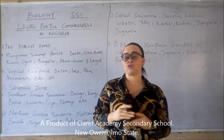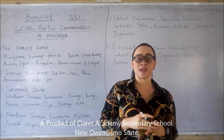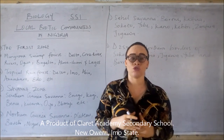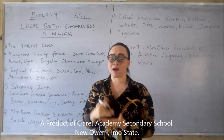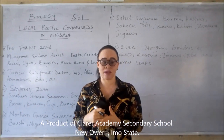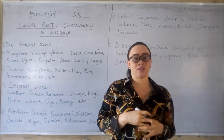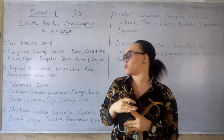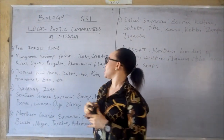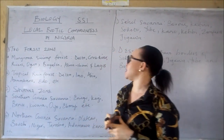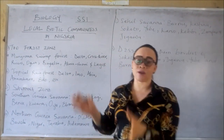Now in the forest zone, the forest zone is divided into two. You have the mangrove swamp forest and you have the tropical rainforest. Now the mangrove swamp forest is found in states in the coastal region.